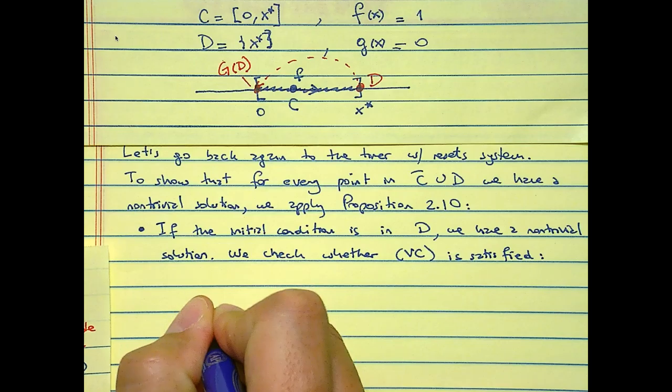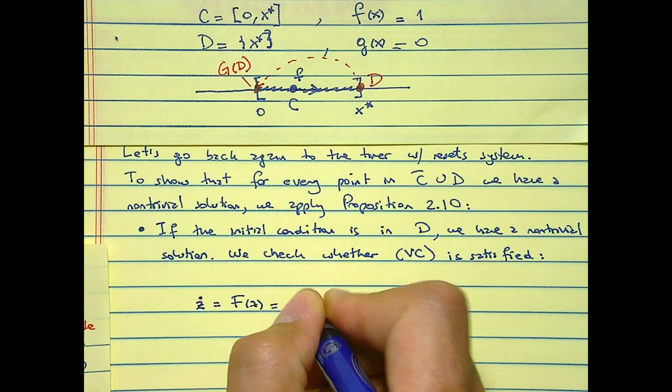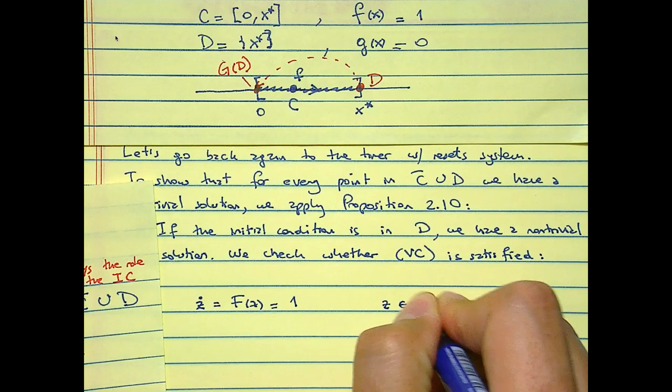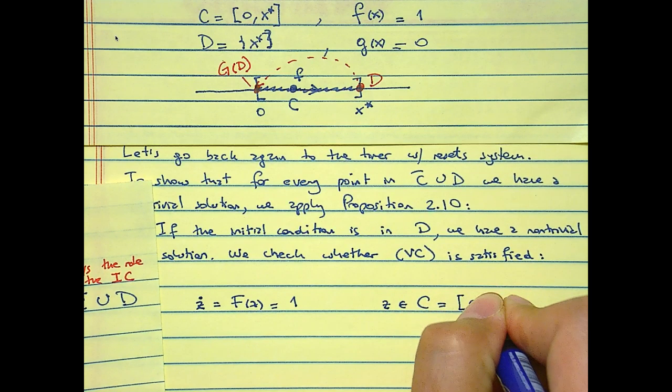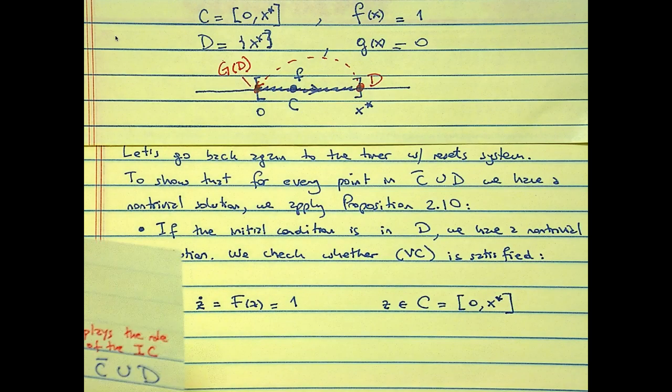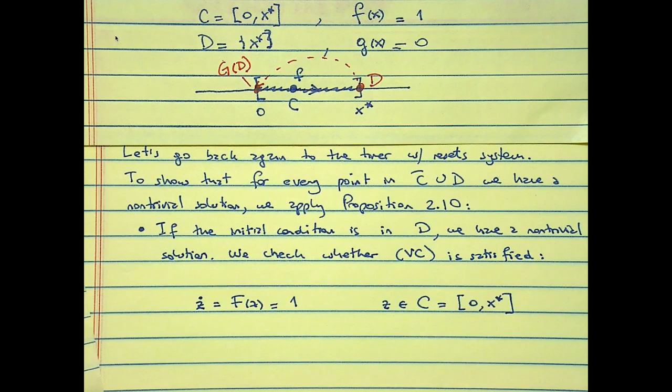What is the system? C dot equal to F of C equal to 1, where Z belongs to C, which in our case is 0 to X star. What do you think?